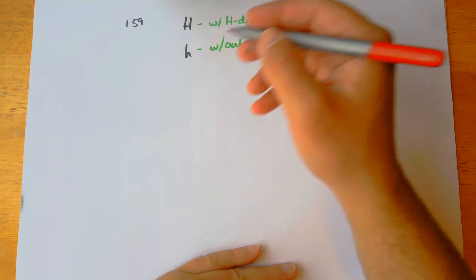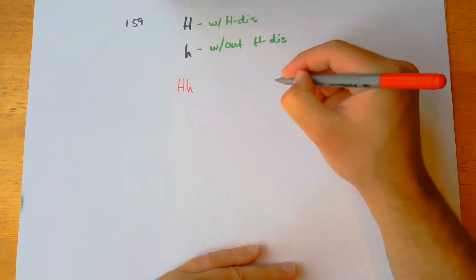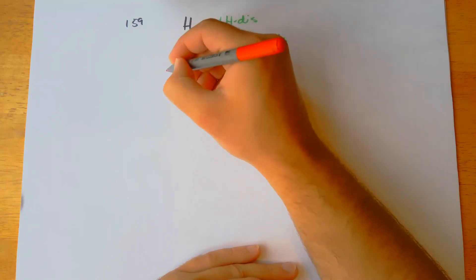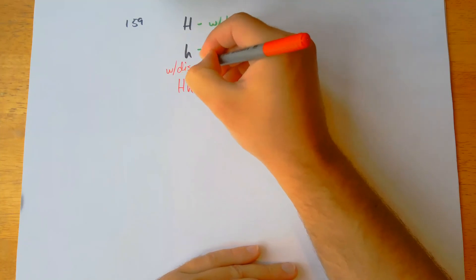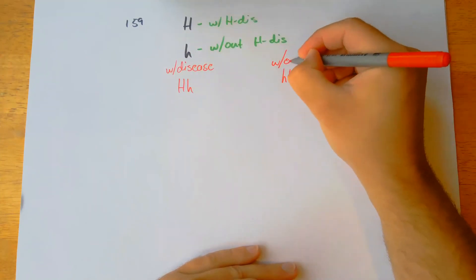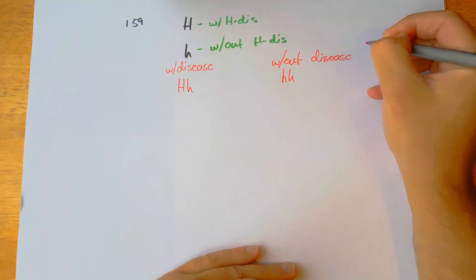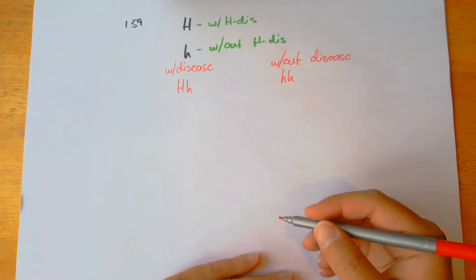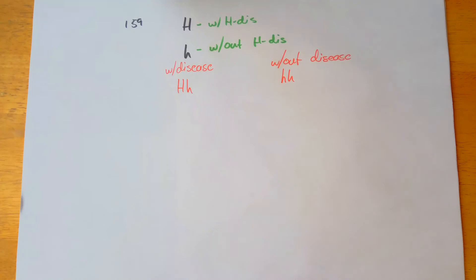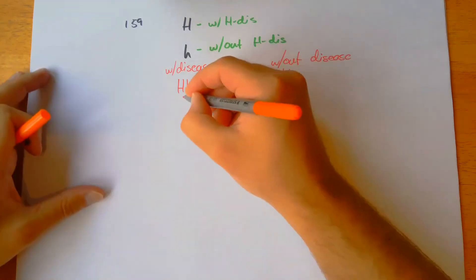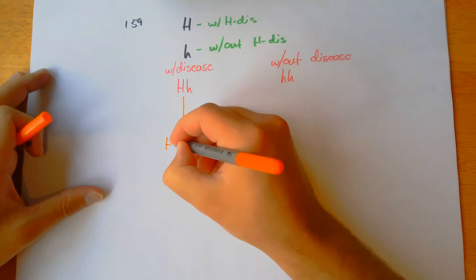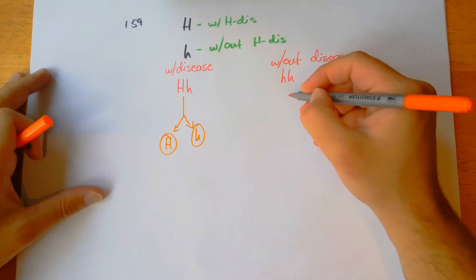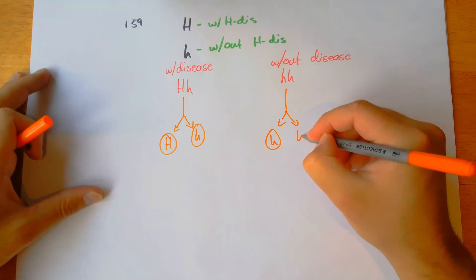We'll start off, as the book asks, by setting out the genotype for the father and the genotype for the mother. We're going to say he is a carrier of the disease, and the mother is without the disease. It's always good to give the phenotypes for the parents as well. We'll show the two possible gametes: during meiosis we get a dominant allele and a recessive allele from the father's side, and two recessive alleles from the mother's side.